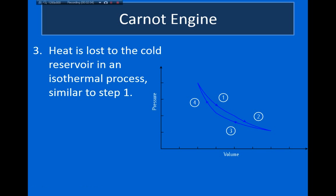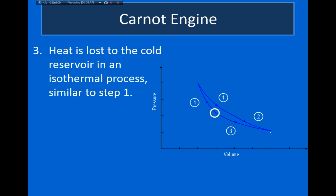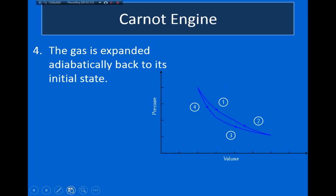Step three is the reverse of step one — we remove heat from the engine in an isothermal process. After extracting work during the first two steps, we now need to return to the starting state. Finally, step four is an adiabatic compression, which is essentially the reverse of step two, and this brings us back to the initial state.